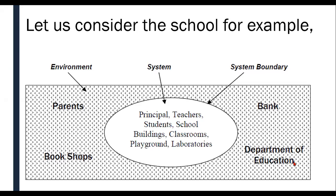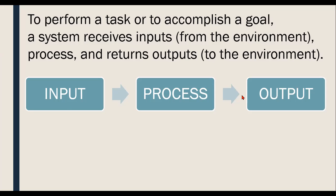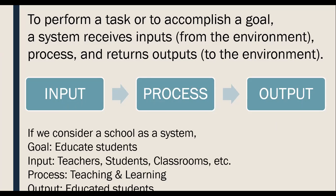I explained this system concept using the school example. In the school example, we saw that the school is a collection of components such as principal, teachers, students, school buildings, classrooms, playground, laboratories, etc. — components that work together in the school system. We understood that a system performs its operation in the IPO cycle, where it takes some input, processes it, and gives some output. The goal of a school system is to educate students. The inputs are teachers, students, and classrooms; the process is teaching and learning; and the output is educated students.